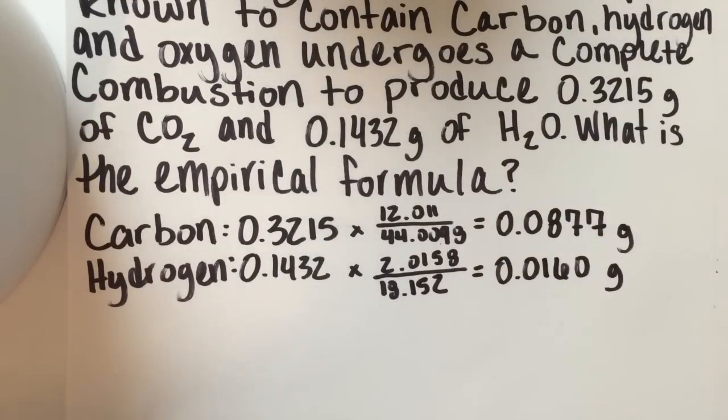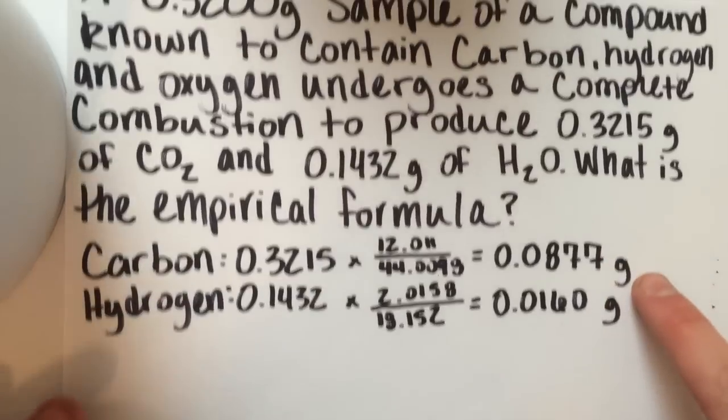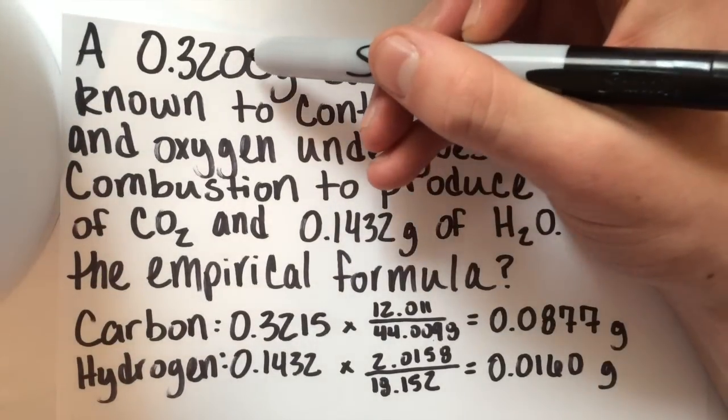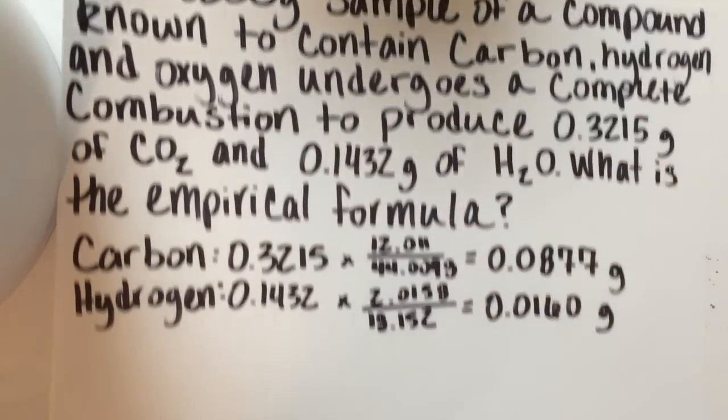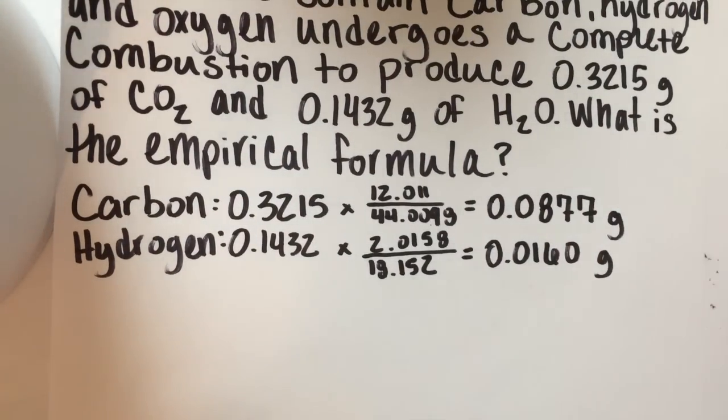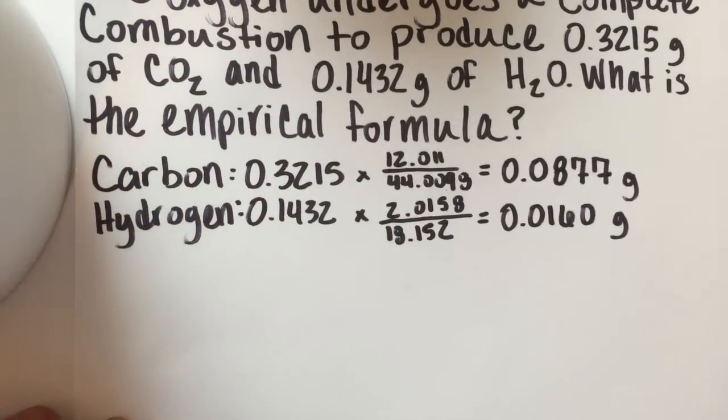Step two, find the grams of oxygen in the sample by subtraction. To do this we are going to subtract the amount in grams of hydrogen and carbon from the total mass of the sample. Since the compound we're finding only contains carbon, hydrogen and oxygen you can do this. You're just going to subtract your starting mass and subtract these two values or the product of these two. So let's do it.